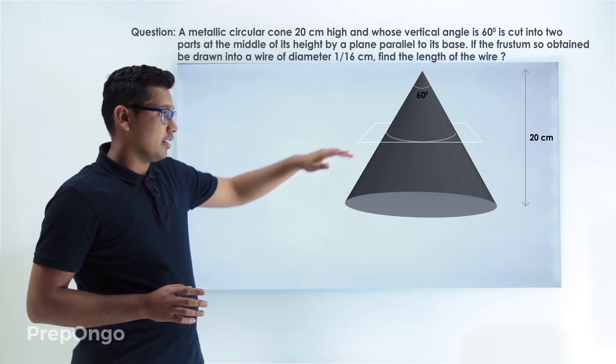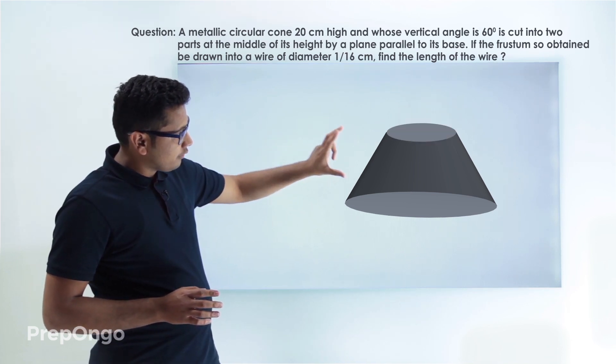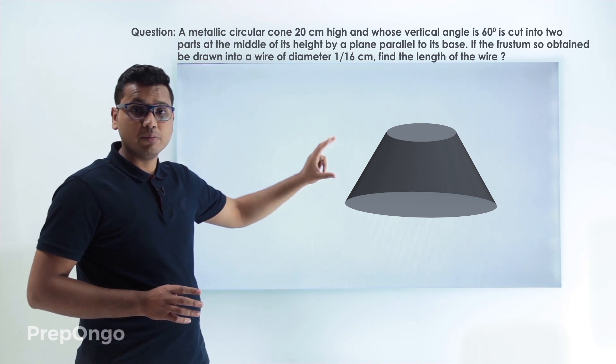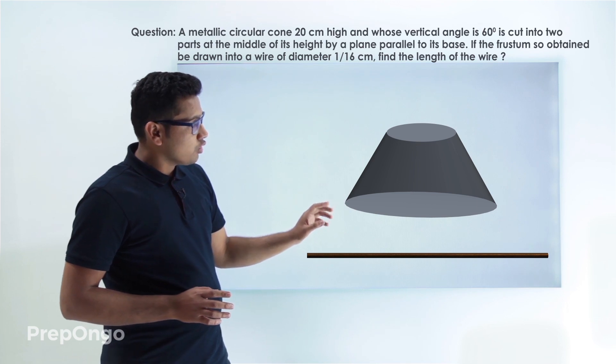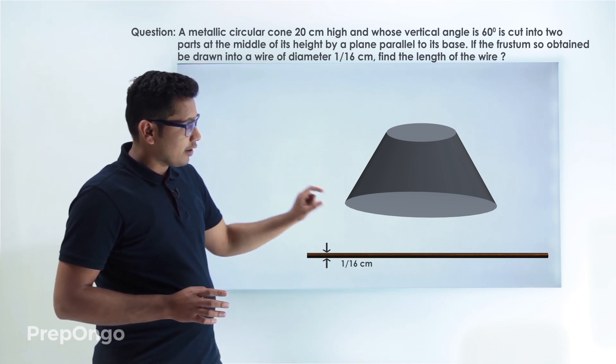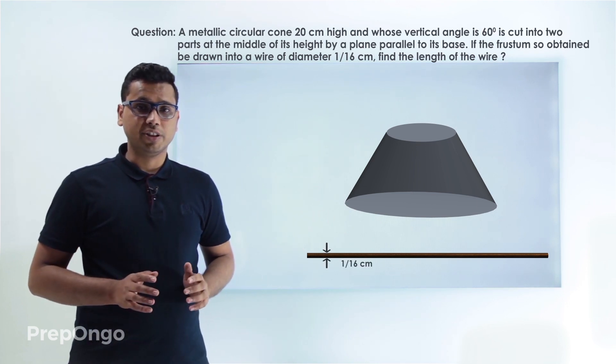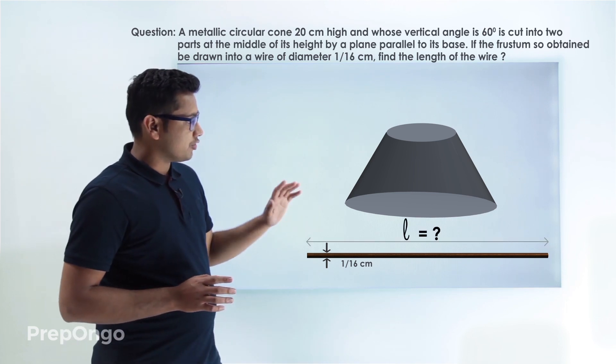So it is cut here and you will find that we got a frustum of a cone, and then this frustum is drawn into the wire whose diameter is 1 by 16 centimeter. So we have to find out the length of this wire.